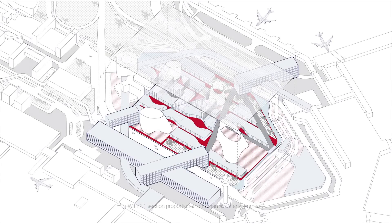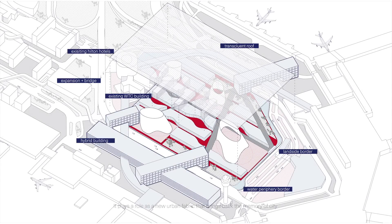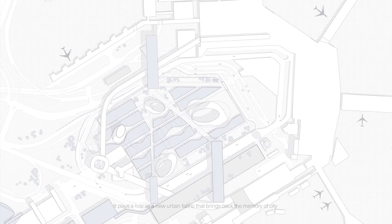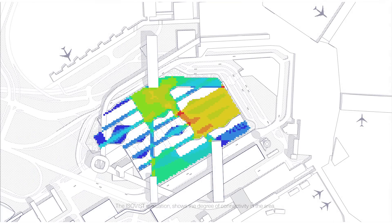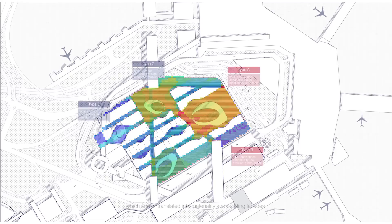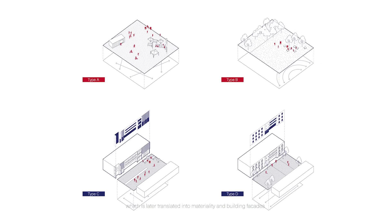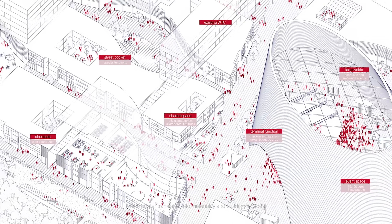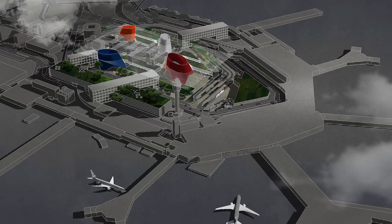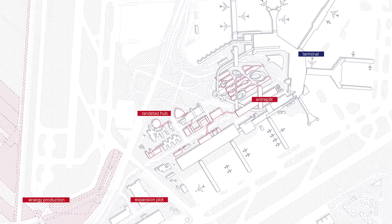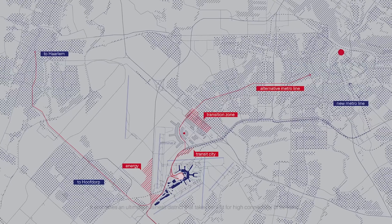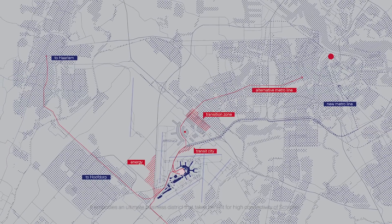With a one-to-one section proportioned on a human-scale environment, it plays a role as a new urban fabric that brings back the memory of the city. The eye surface evaluation shows the degree of connectivity in the area, which is translated into materiality and building facades. The design includes not only a profits program, but also shortcuts to reduce the load of the terminal building and energy production space. The Tambor is an ultimate business district that takes benefit from the high connectivity of Schiphol.